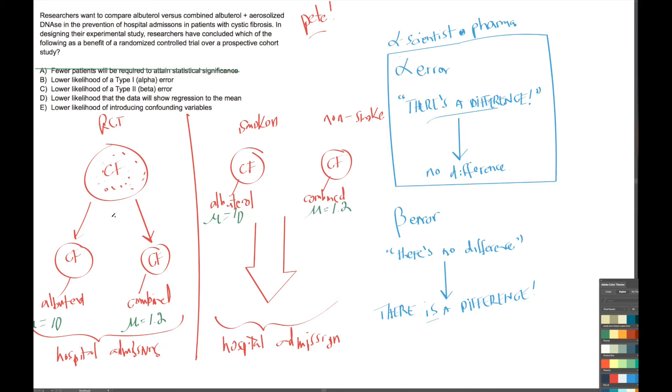In other words, the RCT is as vulnerable to an alpha error or a beta error as the prospective cohort study. Despite the design of the study, we're as likely to make an alpha error or beta error in either one. So we can cross these out.